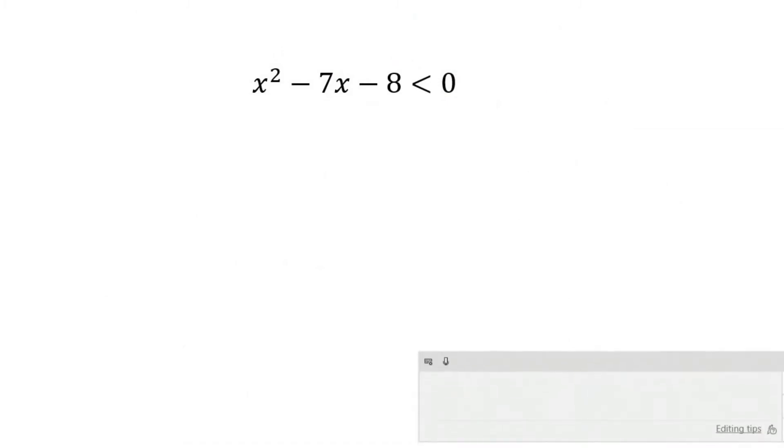To solve an inequality, think of this as the same as a normal trinomial. If you had x² - 7x - 8, you can pretend that's an equal sign. So if that was the case, you would factorize as (x - 8) and (x + 1).